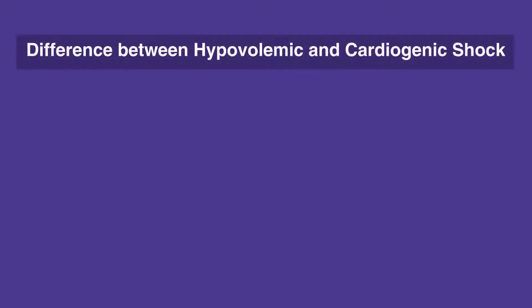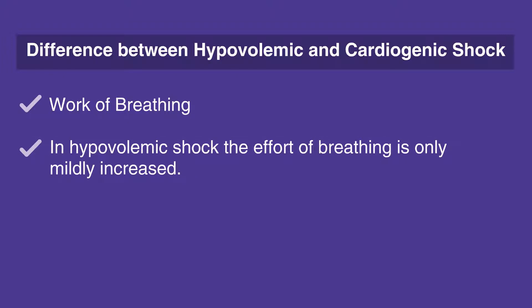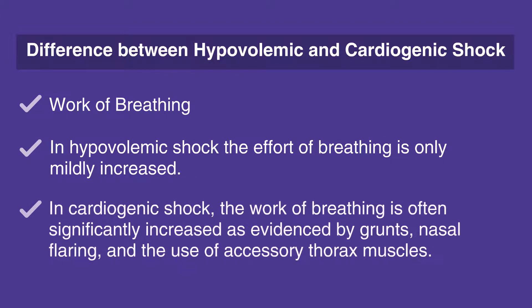One of the key differences between hypovolemic and cardiogenic shock is the work of breathing. In both cases, there will be tachypnea. But in hypovolemic shock, the effort of breathing is only mildly increased. However, in cardiogenic shock, the work of breathing is often significantly increased, as evidenced by grunts, nasal flaring, and the use of accessory thorax muscles.